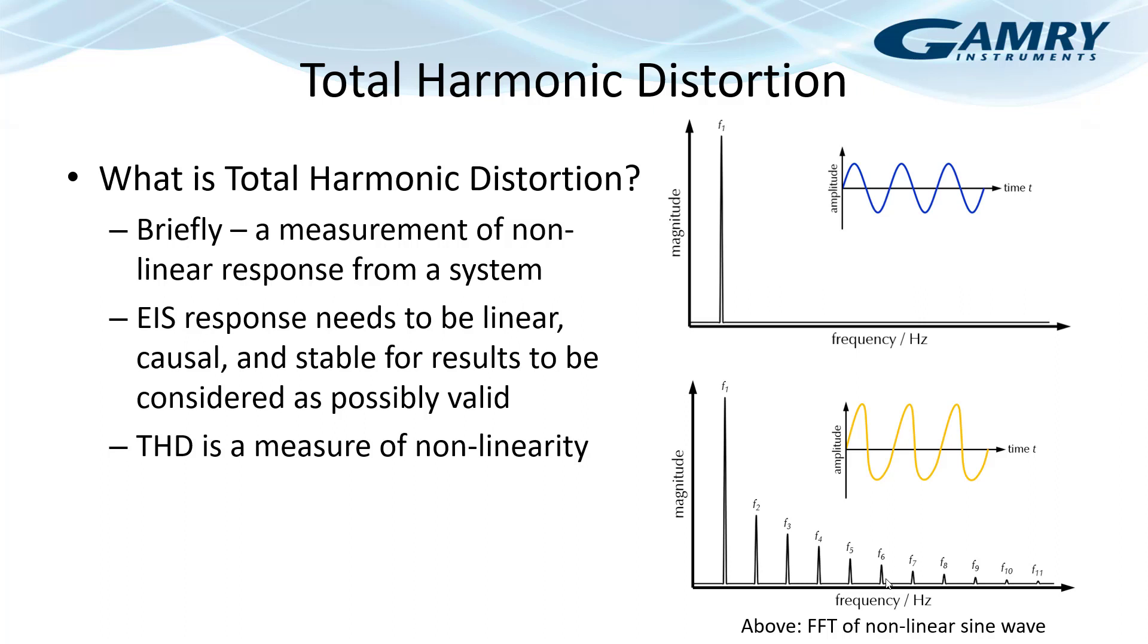So let's go over what total harmonic distortion is, and obviously within this short video I can't get through everything, but we do have a very good application note on our website that explains this in more detail, or of course you can go to the literature to figure out what this is. But briefly, total harmonic distortion is a measurement of non-linear response from a system. So this would be from your cell. I'm going to assume you know something about EIS. You should know that EIS response needs to be linear, causal, and stable for the results to be considered as possibly valid. If any one of those three fails, then your data are not valid for quantitative purposes. And so THD helps us identify this non-linearity.